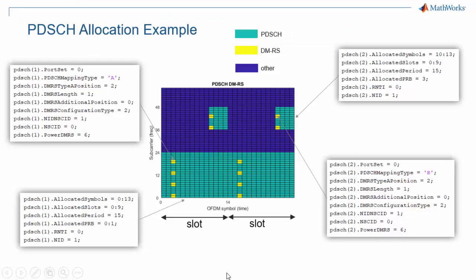Here we can see some of the parameters available in MathWorks 5G Toolbox to specify one or multiple PDSCH. We have just seen how these parameters impact the PDSCH chain in the live example.